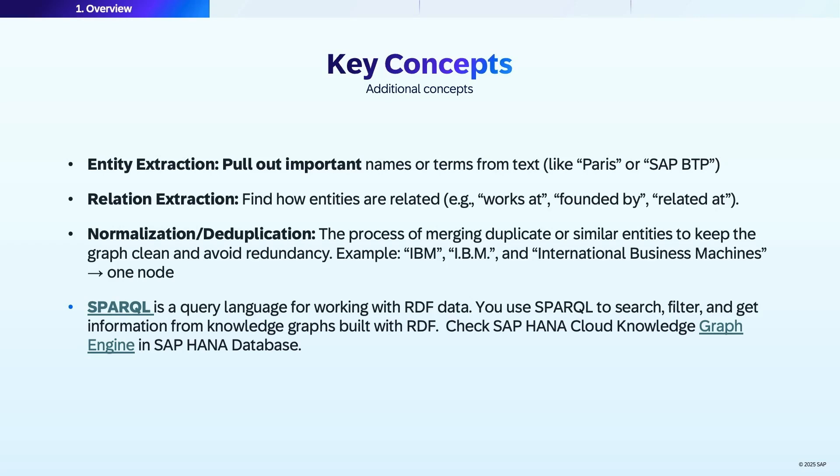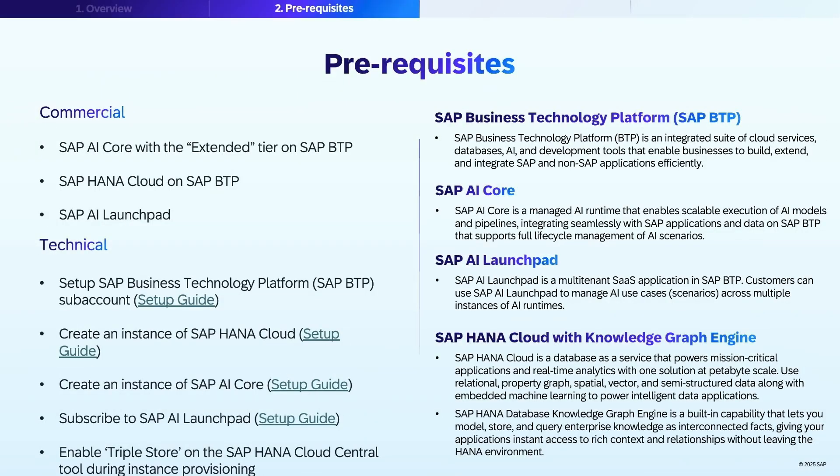Check SAP HANA Cloud Knowledge Graph Engine and SAP HANA database before you start building your knowledge graph powered retrieval augmented generation. You'll need the right SAP landscape in place. First, make sure you have access to SAP BTP, the foundational platform connecting all SAP AI data and development services. Then provision SAP HANA Cloud. This is your core database for storing and querying both business data and knowledge graphs. Activate the knowledge graph engine for semantic modeling and rich entity relationships and the vector engine for similarity search.